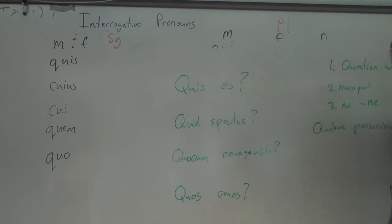And things like that. Quibus pecuniam das. To whom did you give the money? Which group of people did you give the money? Alright. So, it's a question word, main part. It's the main part of the sentence. There's no -ne.